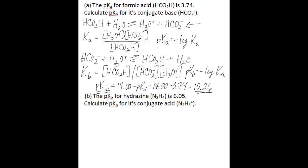For the second part of the problem, you're given that the pKb for hydrazine (N2H4) is 6.05, and you're asked to calculate the pKa for its conjugate acid (N2H5+).